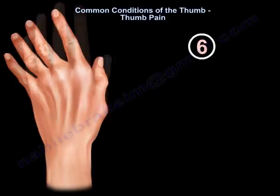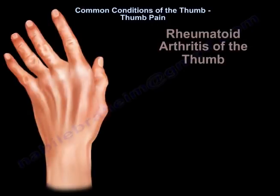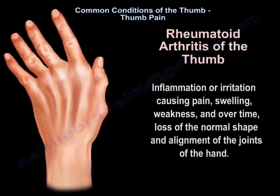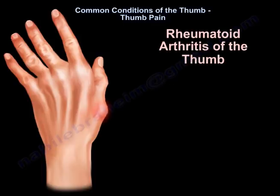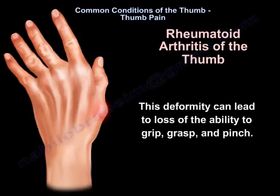Rheumatoid arthritis of the thumb involves inflammation or irritation causing pain, swelling, weakness, and over time loss of normal shape and alignment of the joints of the hand. This deformity can lead to loss of the ability to grip, grasp, and pinch.